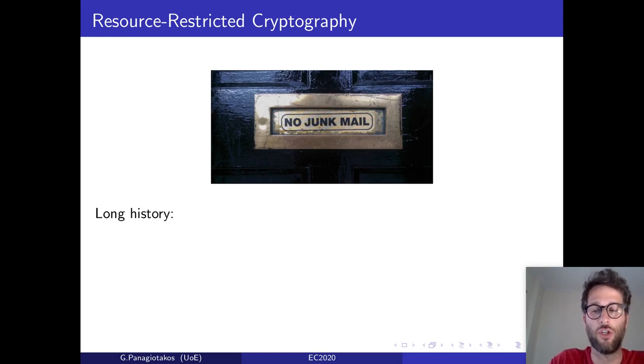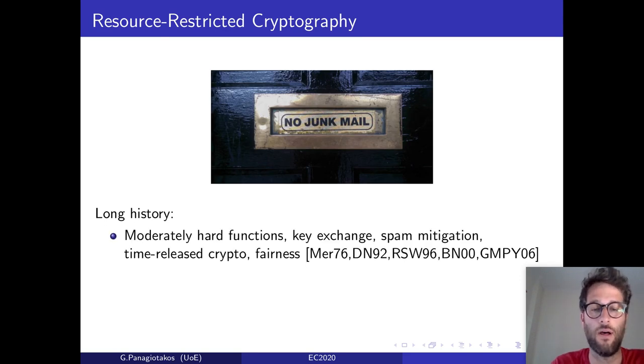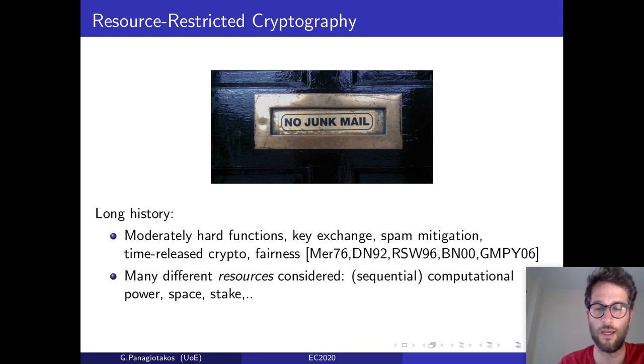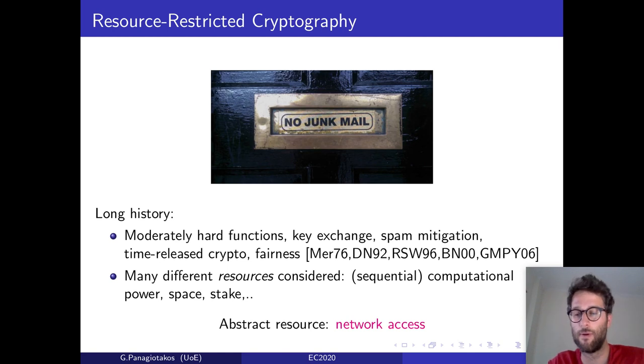While there has been a lot of attention in resource-restricted cryptography in the last 10 years, it in fact has a long history. Merkle in 1976 used moderately hard functions to do key exchange, and Dwork and Naor in 1992 used them to mitigate spam attacks. Time-release crypto was invented by Rivest, Shamir and Wagner in 1996, and a bunch of papers tried to use this concept to deal with fairness issues. Now, in all these works, many different resources were considered, such as sequential computational power, parallel computational power, space and stake. Here, we take a more abstract approach and consider network access as our resource.